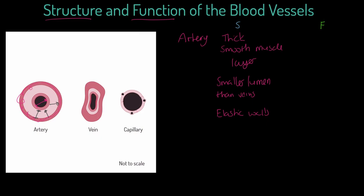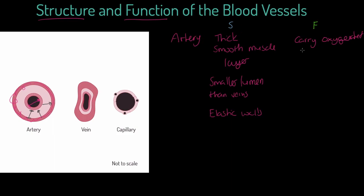Looking at function: function number one, arteries carry oxygenated blood. You might think of the exception — the pulmonary artery doesn't carry oxygenated blood — but all other arteries do, because the blood is leading away from the heart. Coming down to the next function: they cope with high blood pressure — high BP.